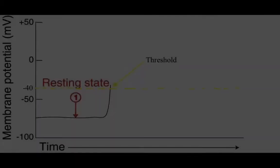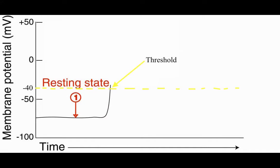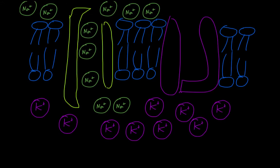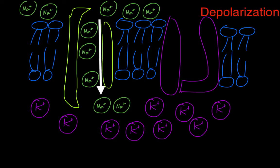The first stage: the action potential rests until the threshold level is exceeded, where the sodium channels open and the ions start to diffuse. And so it enters the depolarization stage, the second stage.